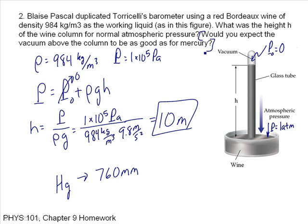So the next question is, would you expect the vacuum above the column to be as good as for mercury? And the answer is, of course, no, because that column is so darn big.